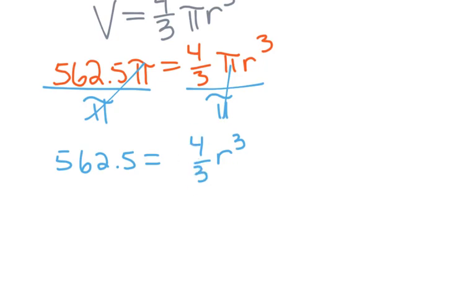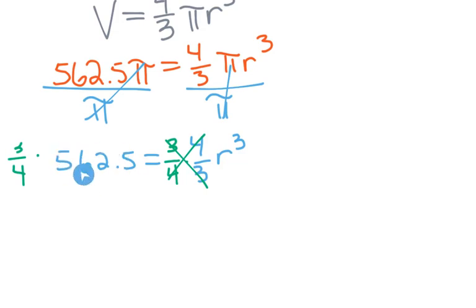Now we need to get rid of the 4 thirds. Recalling from earlier in the year when we learned to solve with rational coefficients, when we have a fraction we multiply by the reciprocal, which is 3 fourths. The 4's and 3's cancel on the right, so we multiply by 3 fourths on the left as well. Taking 3 fourths times 562.5 gives us 421.875, which equals r cubed.